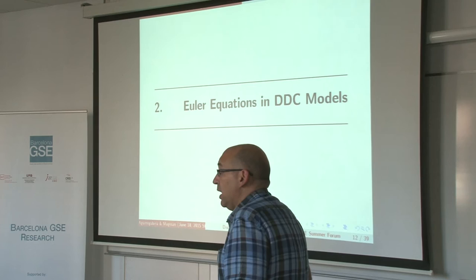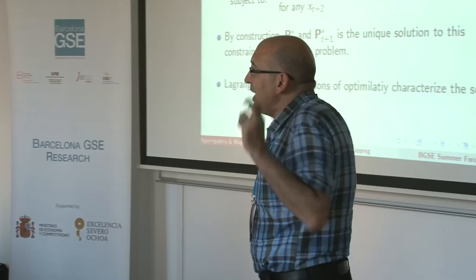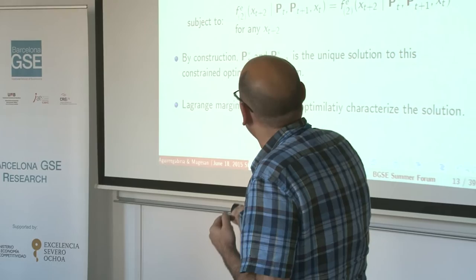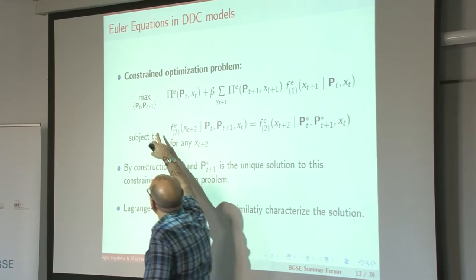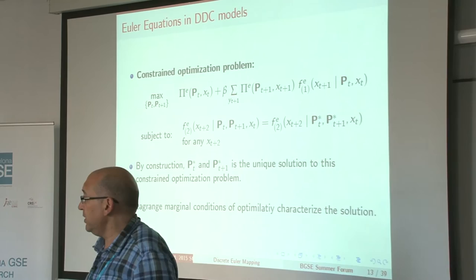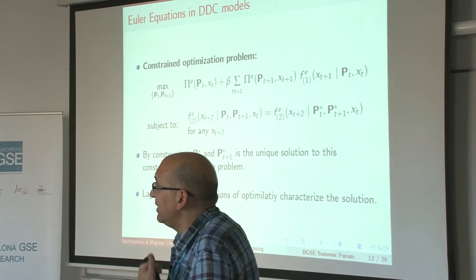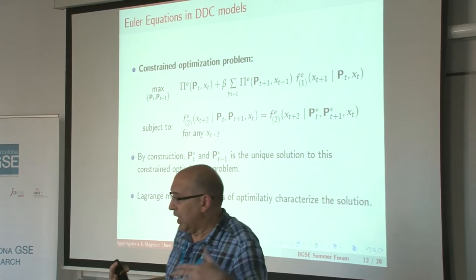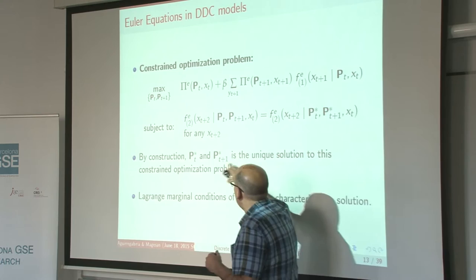Given this problem, we derive Euler equations for this continuous choice decision problem in terms of choice probabilities. We cannot use the most standard approach of combining first-order conditions of optimality with an envelope condition. Instead, we define the following constrained optimization problem: we choose choice probabilities at period T and period T+1, which could in principle be different, to maximize the payoff at period T and expected payoff at period T+1, subject to the constraint that the distribution of state variables at period T+2 is the same as under the optimal choice probabilities. By construction, the only solution to this constrained optimization problem is the choice probabilities that solve the original dynamic decision problem.